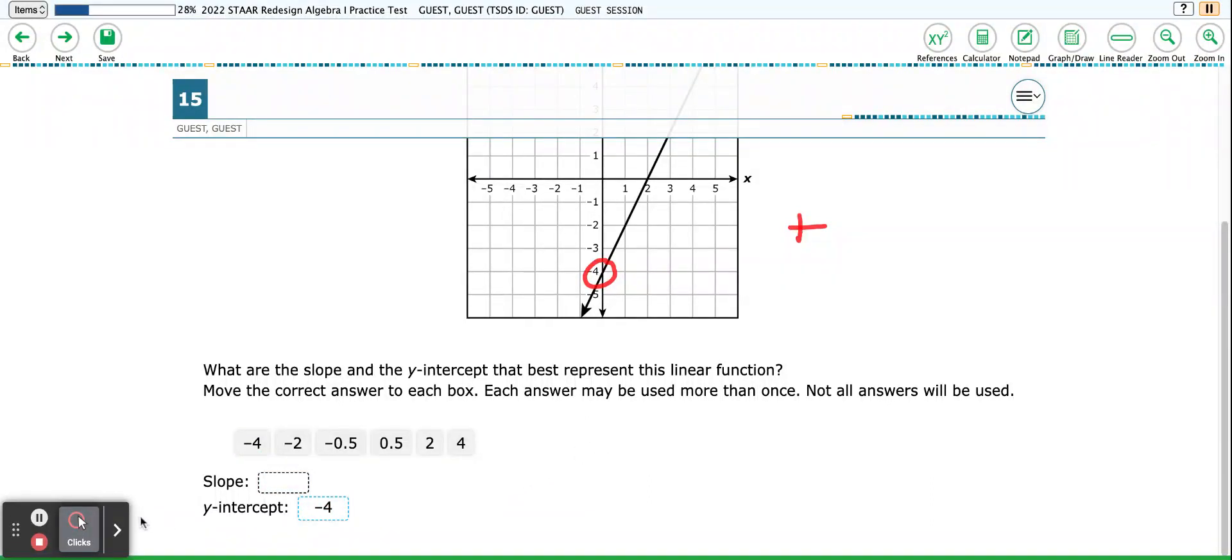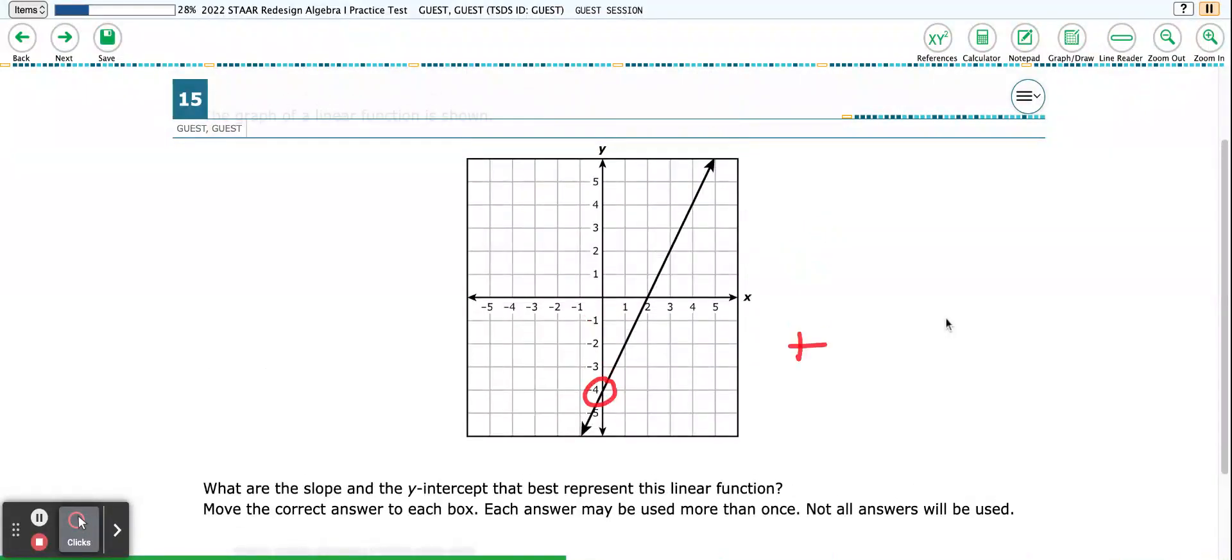Now, for my slope, I need a positive number. So I need not these negative numbers, so I'm going to leave these out, but I'm going to choose 0.5, 2, or 4. So I know that I've got to have a positive number. Now I'm going to use my calculator.